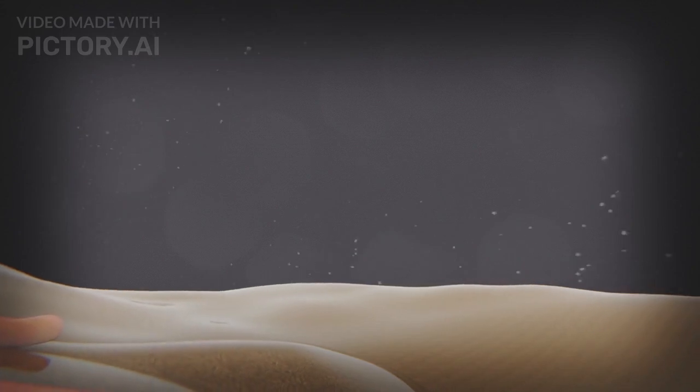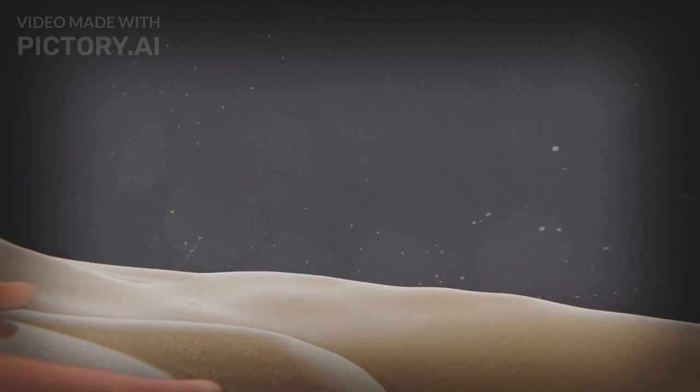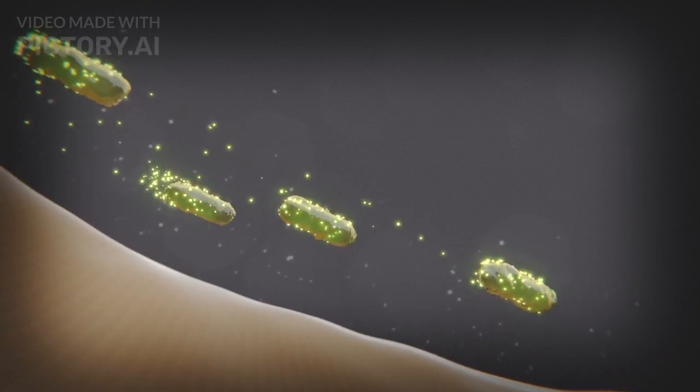5. Opsonization: Antibodies can coat antigens, marking them for destruction by immune cells like phagocytes.